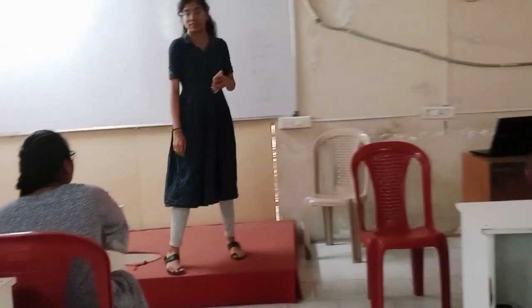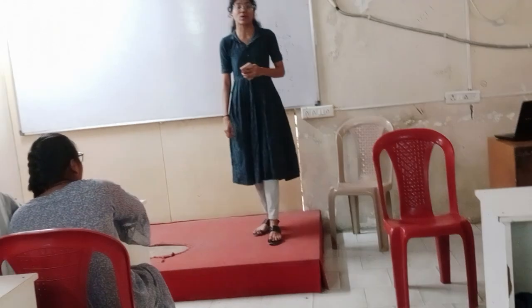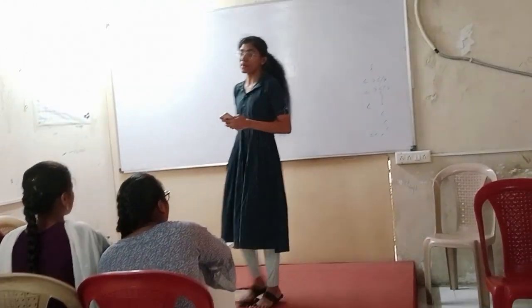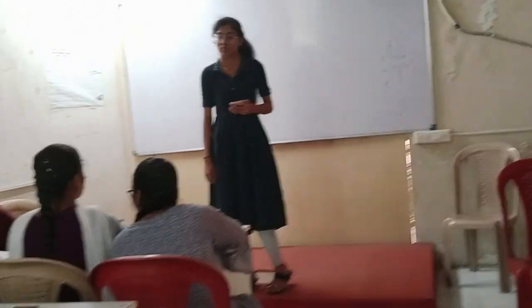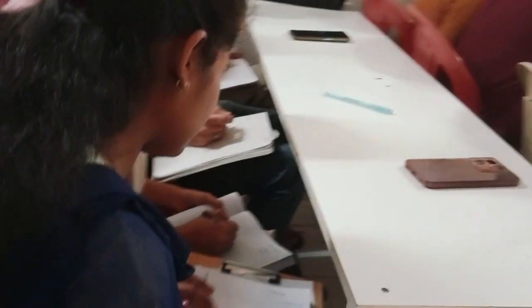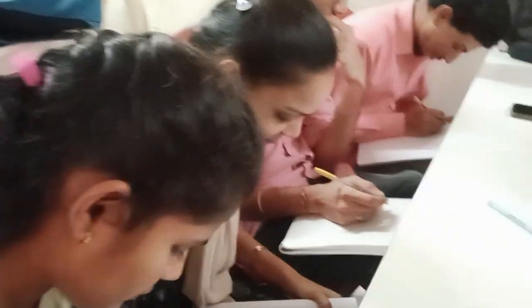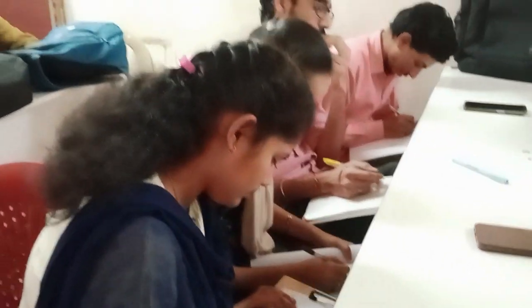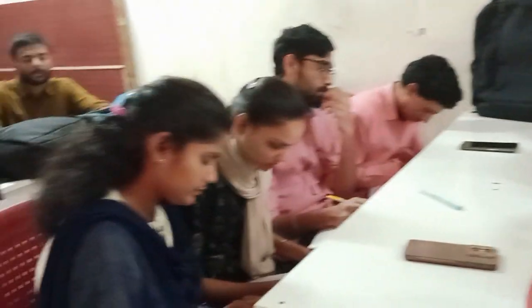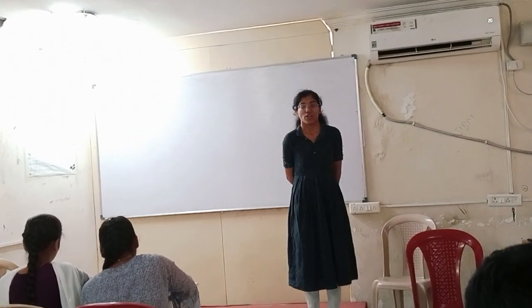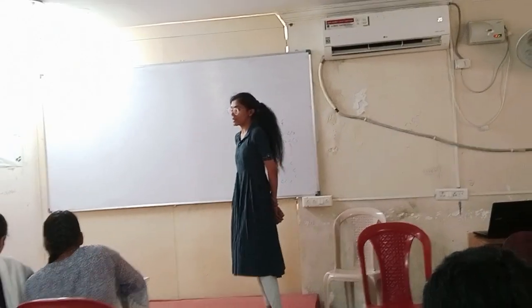Your next instruction: write down the difference between the time with your neighbor. Draw 3 circles on the left hand margin.